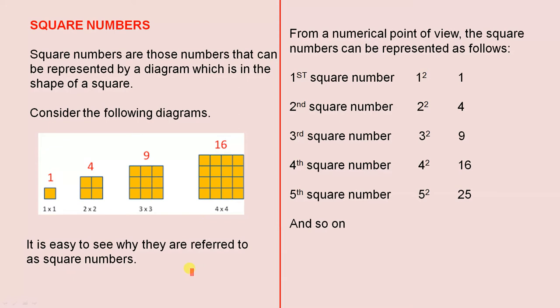It is easy to see why they are referred to as square numbers. From a numerical point of view, the square numbers can be represented as follows. The first square number is one squared, that gives you one.